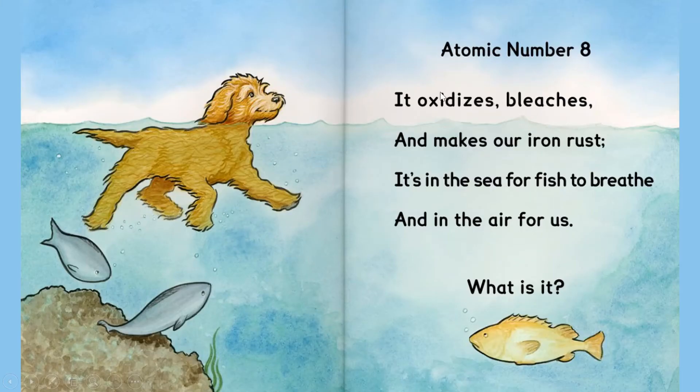Atomic number eight. It oxidizes, bleaches, and makes our iron rust. It's in the sea for fish to breathe and in the air for us. What is it?